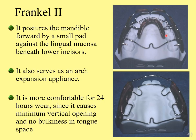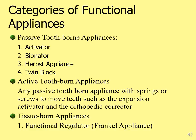Functional appliances can be categorized into three categories: passive tooth-borne appliances without active components; active tooth-borne appliances with springs or screws added for tooth movement; and tissue-borne appliances — with the Functional Regulator or Frankel appliance being the only tissue-borne example.